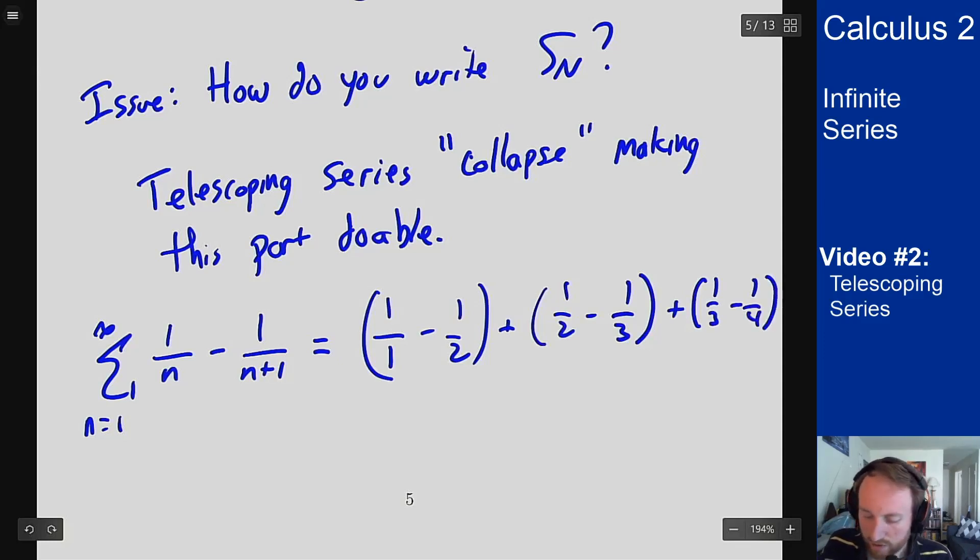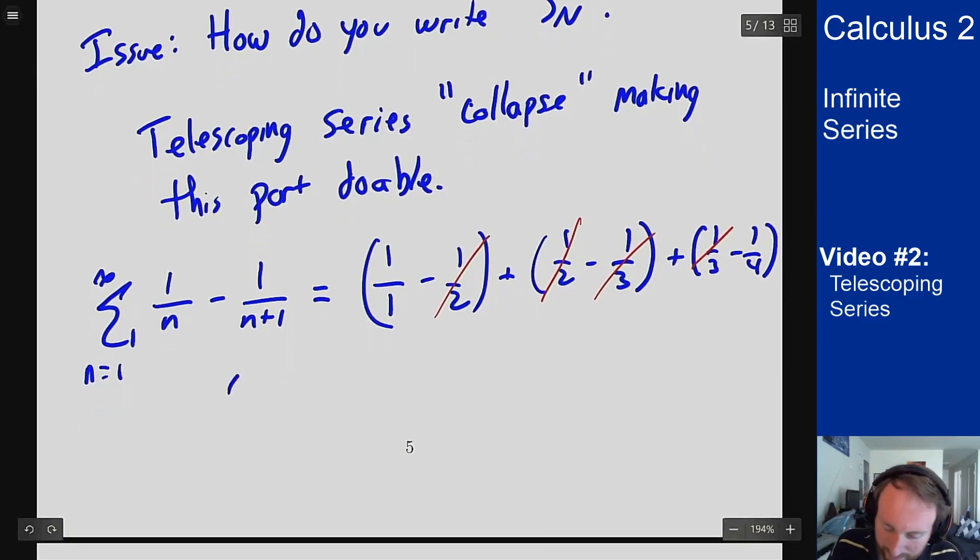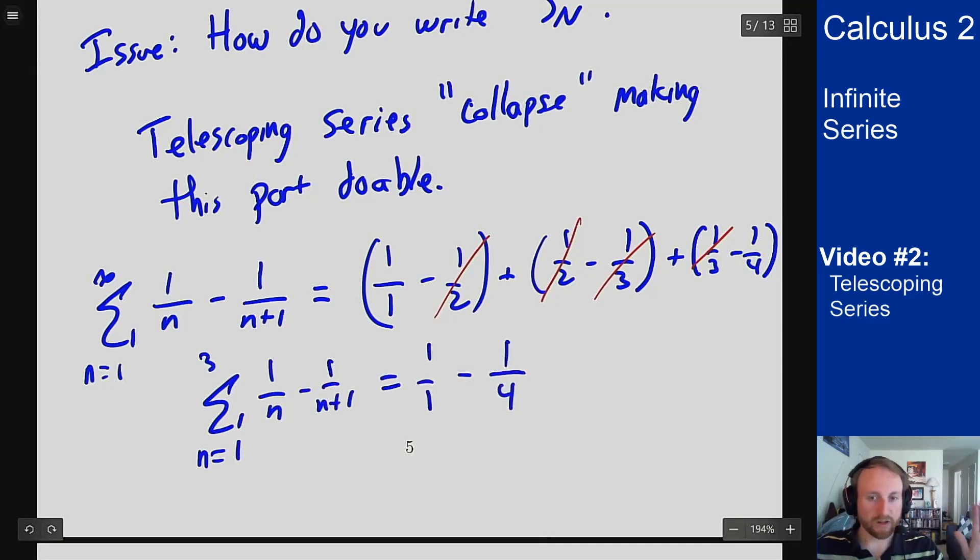And what do we see happening? Well, the one-halves are going to cancel. I have a plus and a minus, they cancel out. These also cancel out, the one-thirds also cancel there, which means if I look at the sum from n equals one up to three of this series, I just get one over one minus the last term one over four. All the middle terms have all just collapsed on themselves, and I just end up with the first term and the last term.